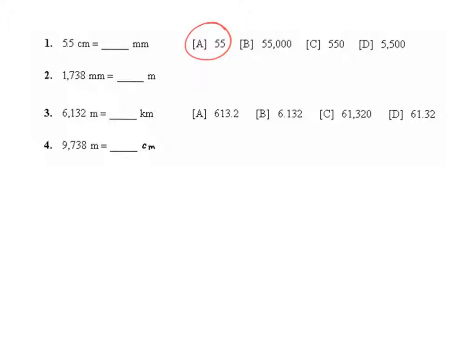Question 2, 1,738 millimeters is how many meters. Milli means one thousandth, so it takes 1,000 millimeters to make one meter. We have more than 1,000 millimeters, so we have more than one meter but not two meters.